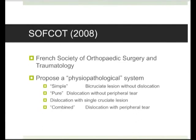I like the point about bicruciate lesion without dislocation — if it's already reduced when first seen, it's not classified as a dislocation. I would have thought a bicruciate injury would fall into that category. The French often come at things from a different point of view, and don't discount the French literature — there's a lot of good stuff.